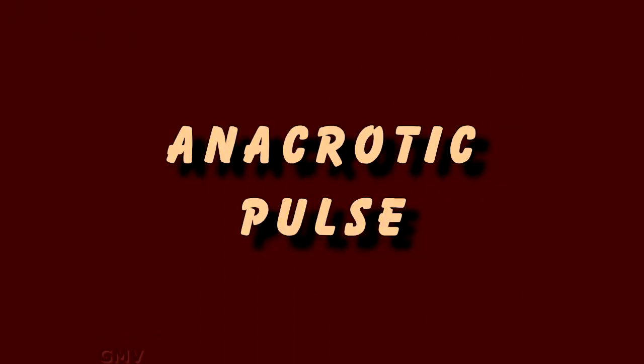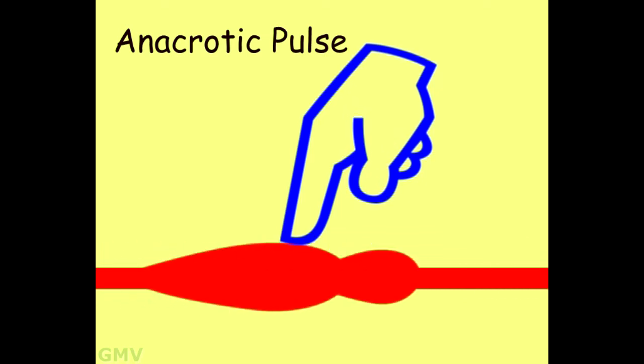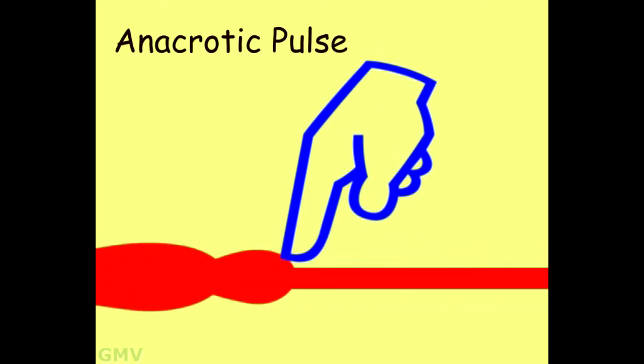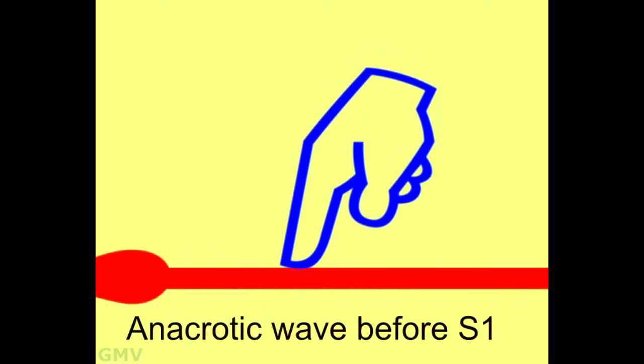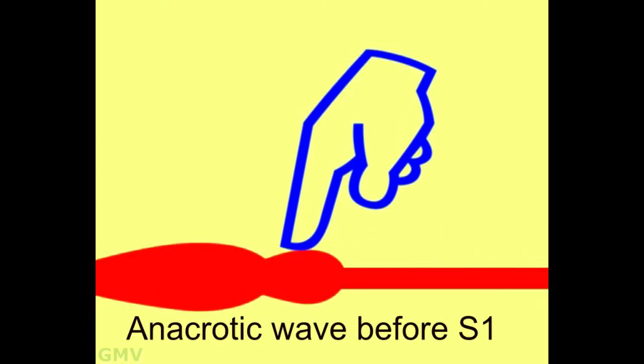Anacrotic pulse seen in severe aortic stenosis. It is a low amplitude slow rising pulse, that is pulsus parvus, with anacrotic wave felt on the upstroke of the pulse. Observe this anacrotic pulse. Note the anacrotic wave on the upstroke of the pulse, that is before the main percussion wave.